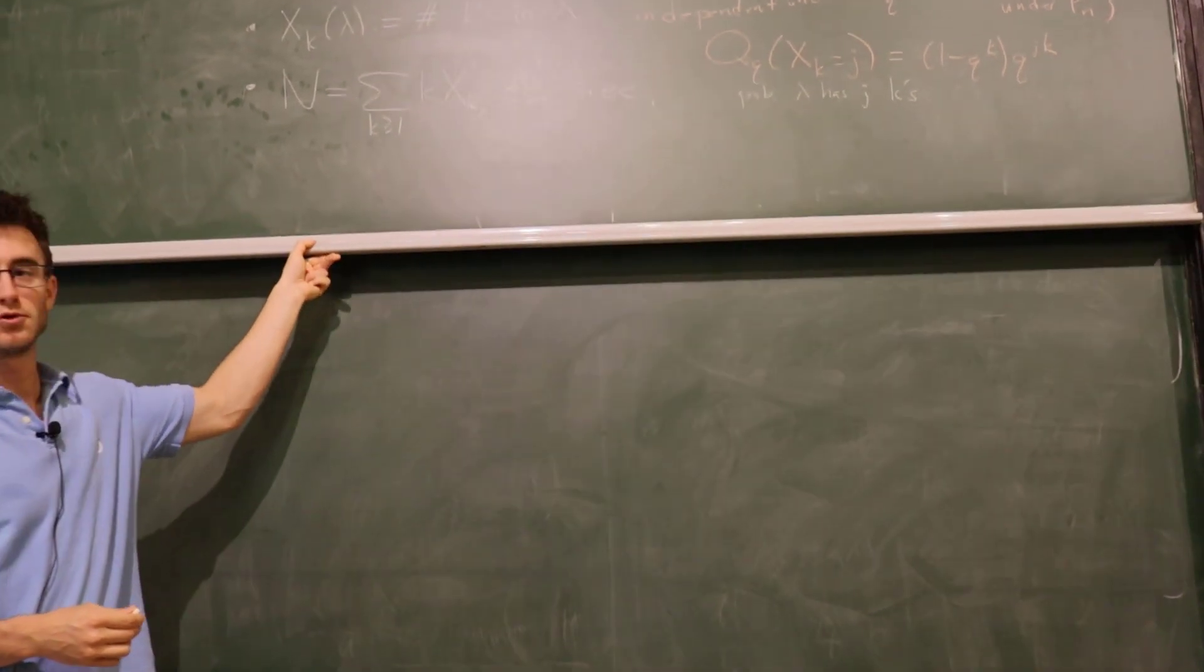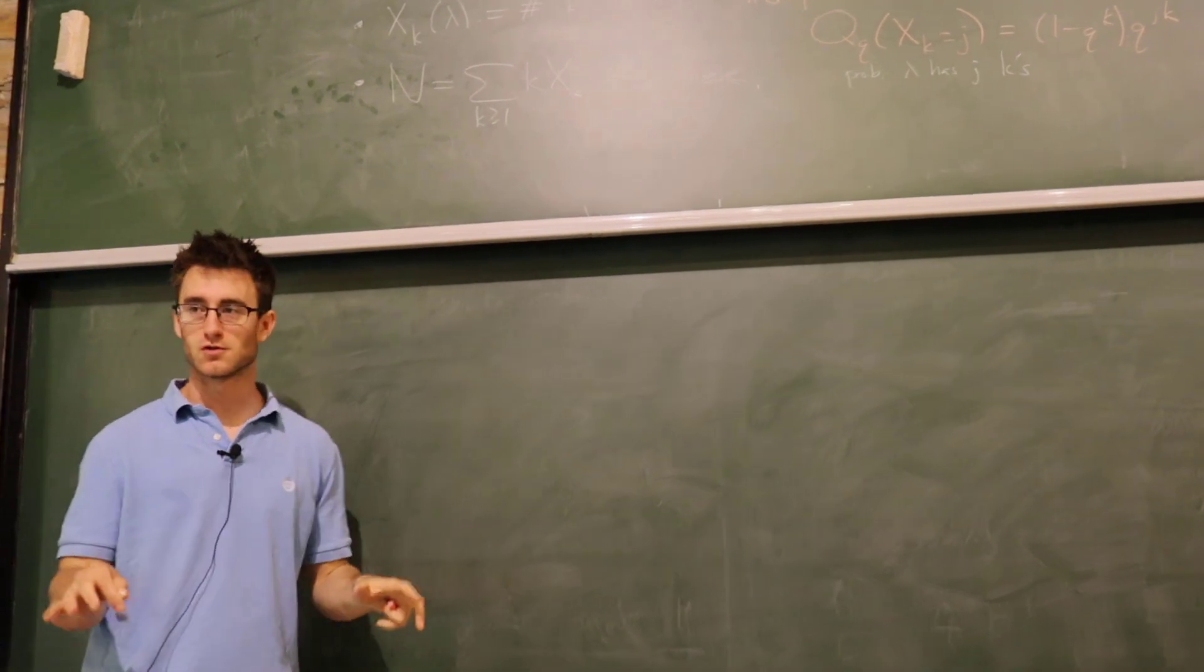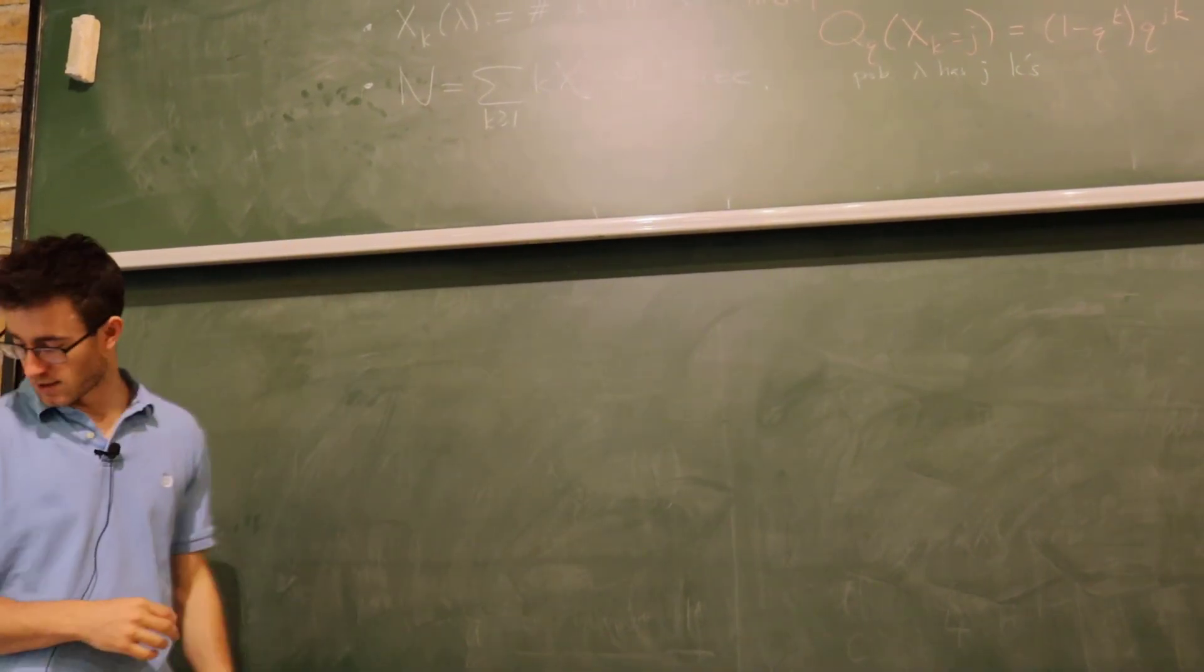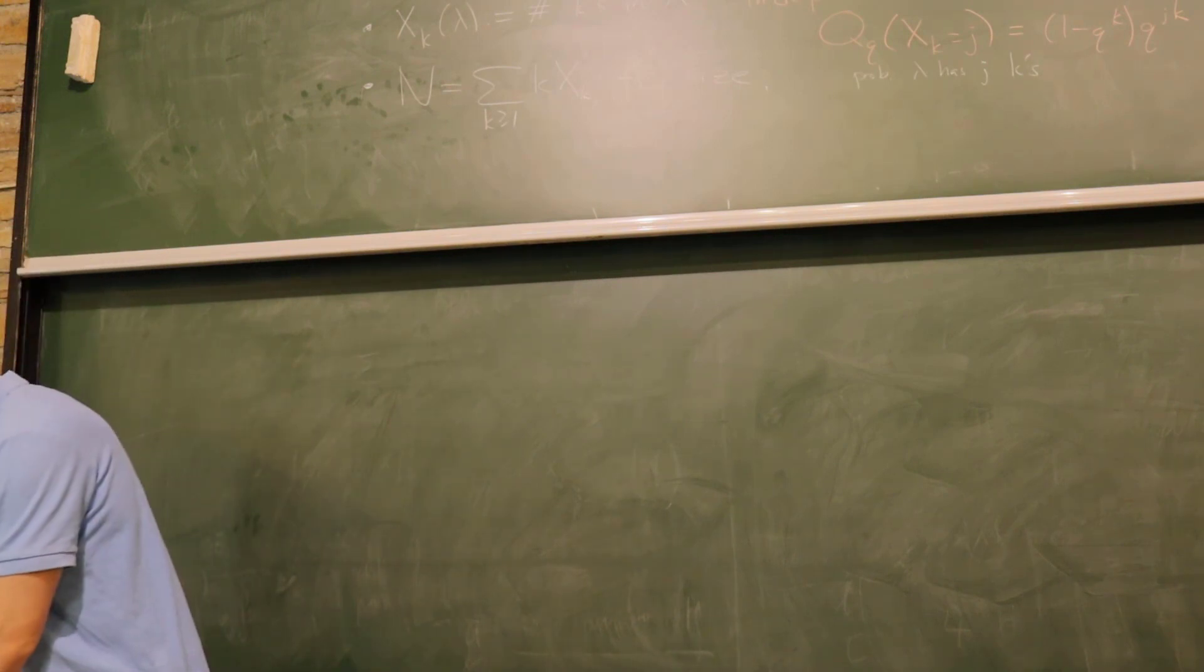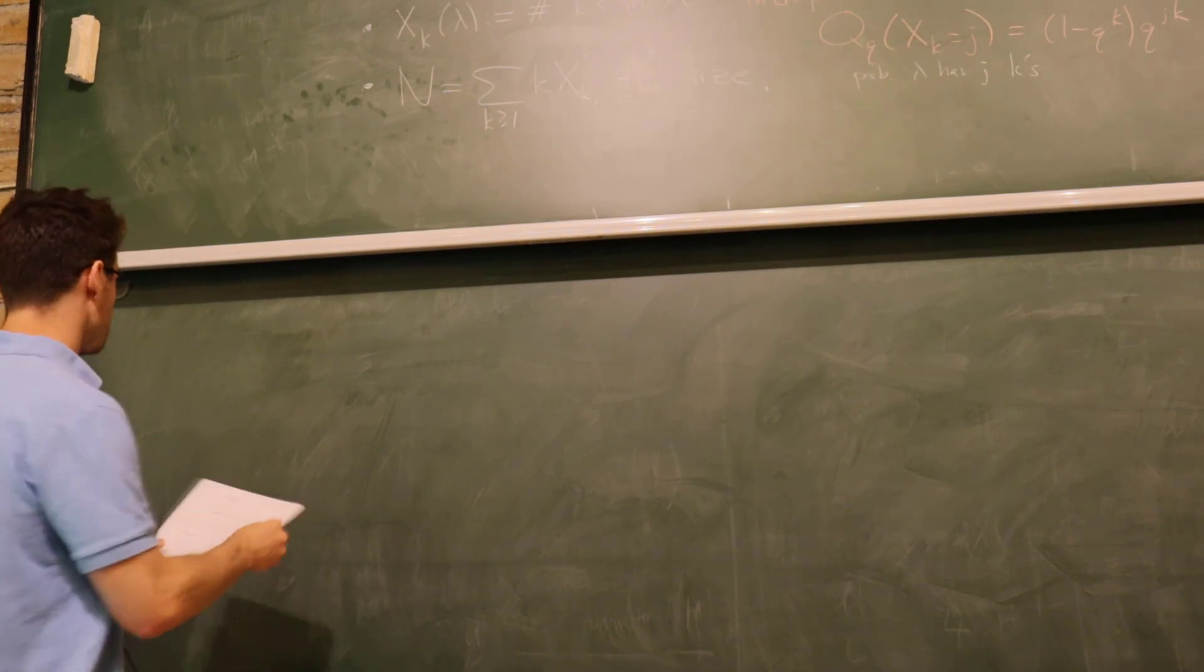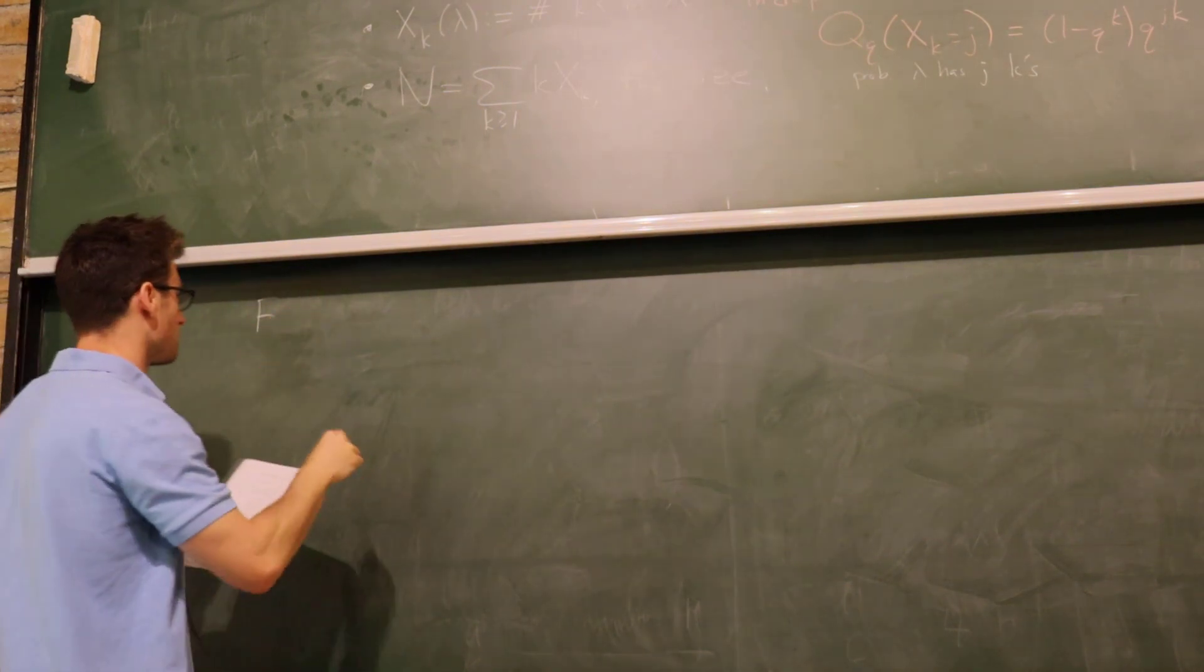Under p sub n, only in the limit under p sub n. I'll also remind you what the probability density of these guys is. The probability that you have j k's under the Boltzmann model is a really simple expression: 1 minus q to the k times q to the j k. I'll call capital N the size. If you add up k times x sub k, so add up k times the number of times k appears, then that's the size. That's all I'll need.